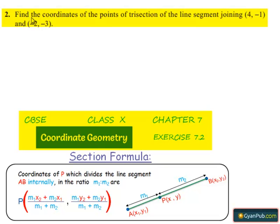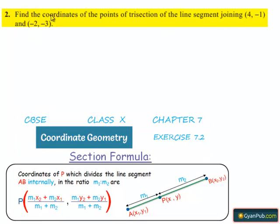Coming to the second question: find the coordinates of the points of trisection of the line segment joining (4, -1) and (-2, -3).